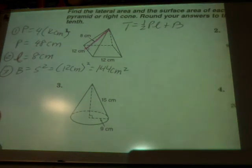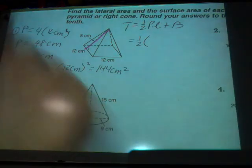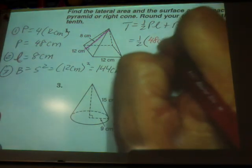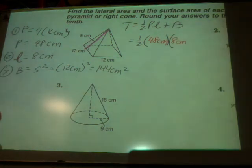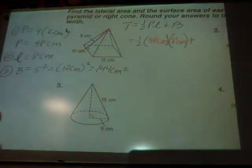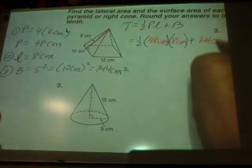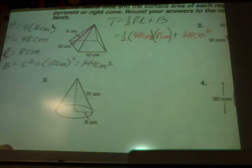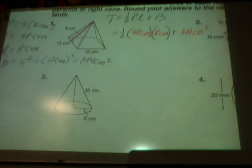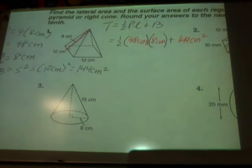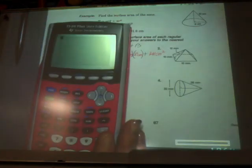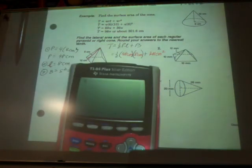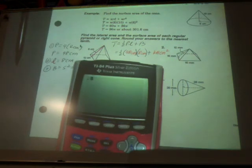And so now I have everything to plug into that formula. One half, my perimeter is 48 centimeters. My slant height is 8 centimeters. And my big B is 144 centimeters squared. So I'm going to break out the handy dandy calculator.